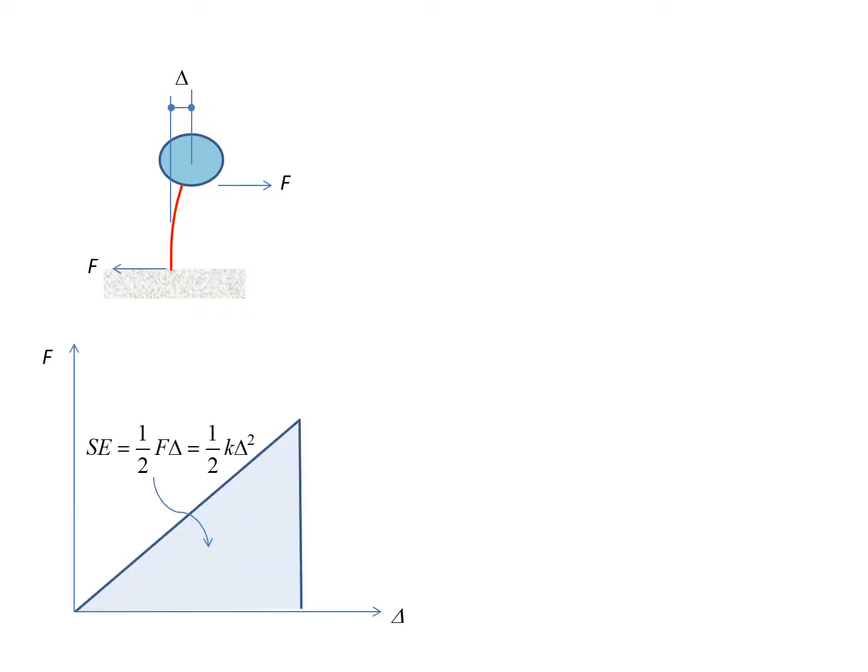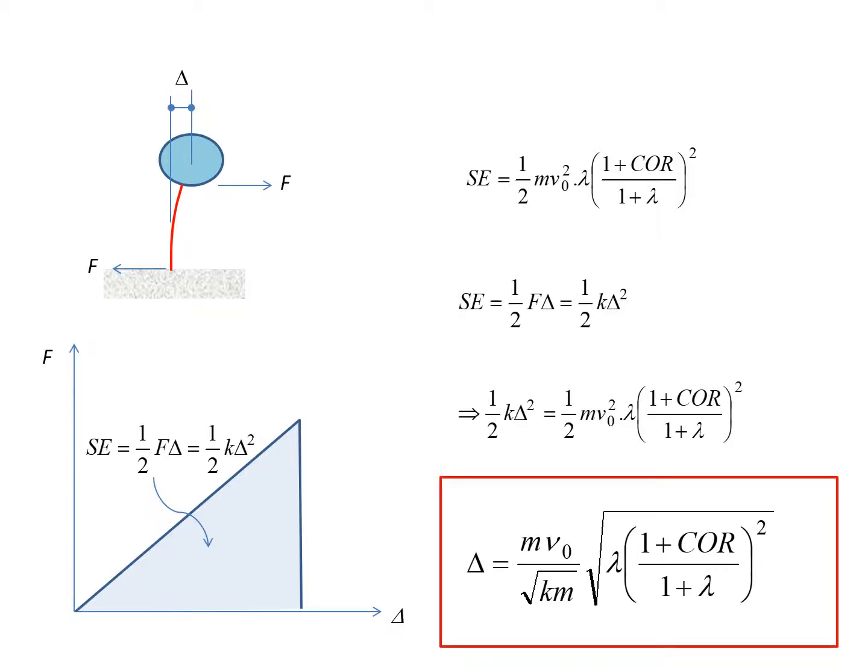Now, the next step is to calculate the amount of drift of the single degree of freedom system. Given the amount of strain energy absorbed by the pole, then the displacement delta can be found.